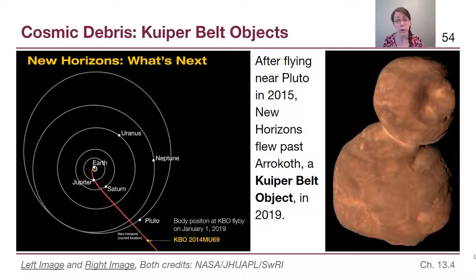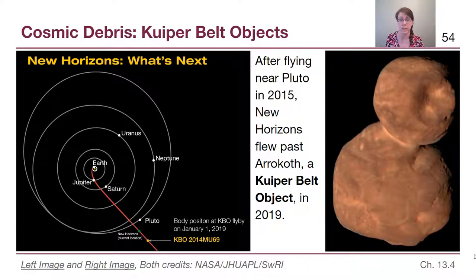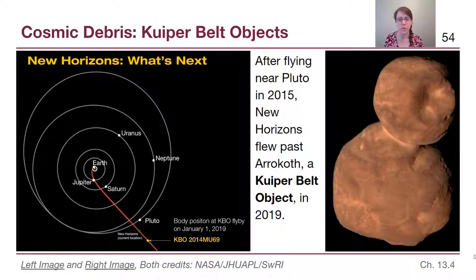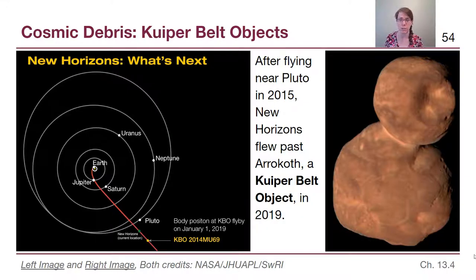After flying near Pluto in 2015, New Horizons flew past an additional Kuiper Belt object in 2019 that is still being studied. It was originally called KBO 2014 MU69 and now has the name Erikoth. It's not the only Kuiper Belt object we know of, but it is the one we've flown closest to, except for Pluto.